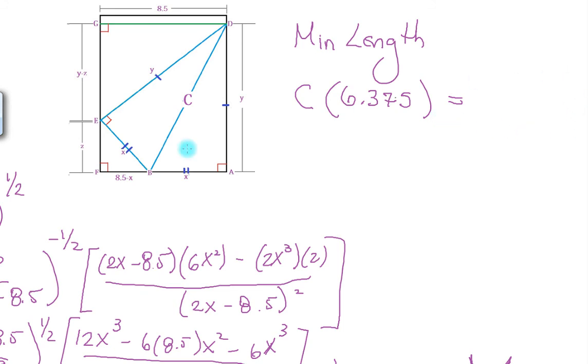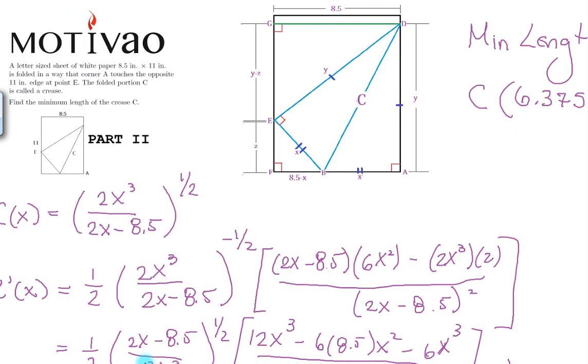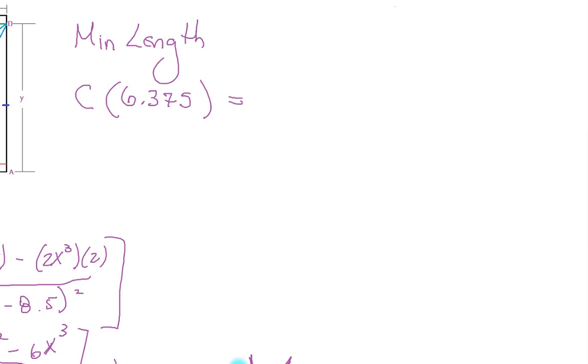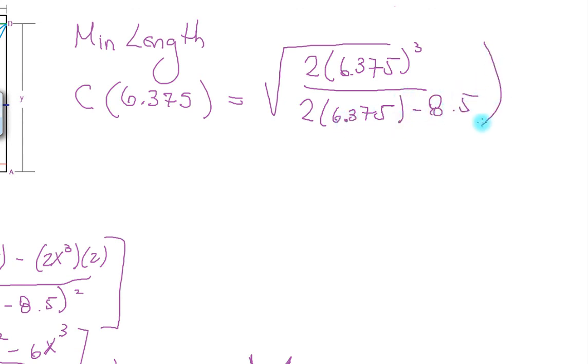So minimum length is c of 6.375, which equals the square root of 2 times 6.375 cubed divided by 2 times 6.375 minus 8.5. And this, after simplification, will give me 11.04.